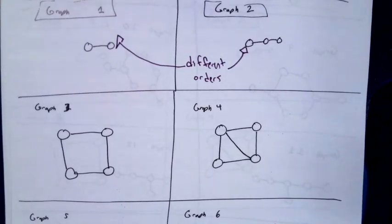What about why graph 3 and graph 4 are not isomorphic? They have different numbers of edges, different sizes.